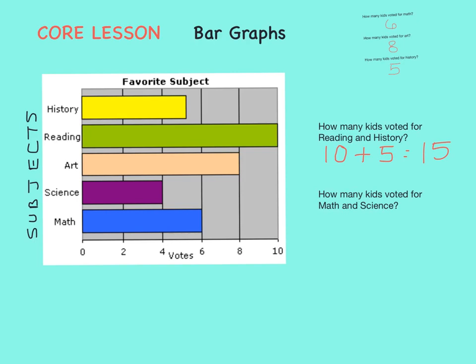What about for math and science? Math received six votes and science received four votes. If we want to know math and science combined, we'll need to add those together. Six plus four equals ten. Ten kids voted for math and science.